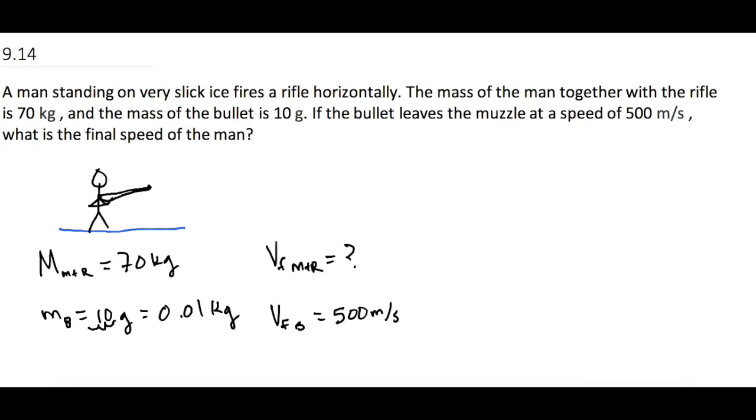Alright, so let's write the equation that we're going to use. This is basically all about conservation of momentum. So we're going to use m₁v₁ initial plus m₂v₂ initial equals m₁v₁ final plus m₂v₂ final. So all of the momentum that we start out with has to equal all the momentum that we end up with.